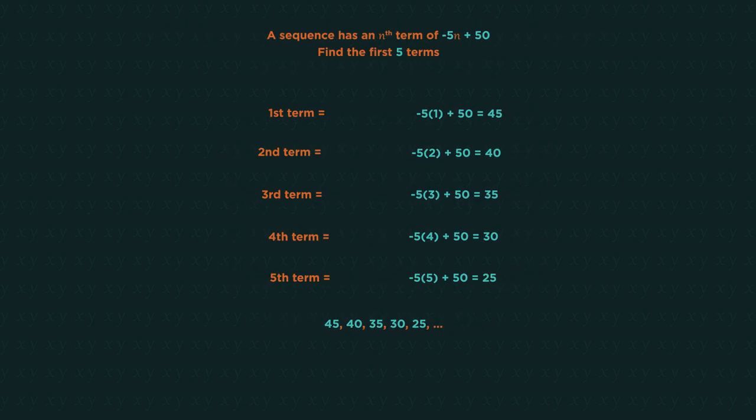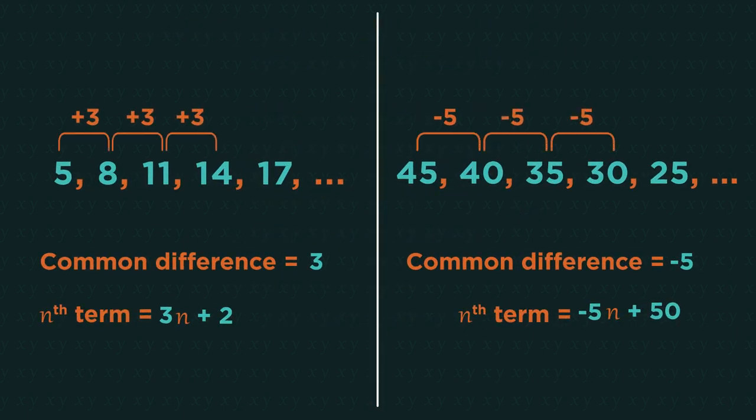Look at these two sequences. What do you notice about the common difference and the nth term rule? For arithmetic sequences, the number in front of the n is always the common difference. So because the common difference was minus 5, the nth term rule is minus 5n.